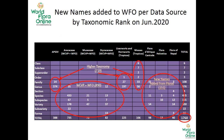Here is an example of where new names are coming from. Last year, new names were not only coming from the process of incorporating the higher taxonomy and the WCVP dataset, but also from new names coming from digitized floras.